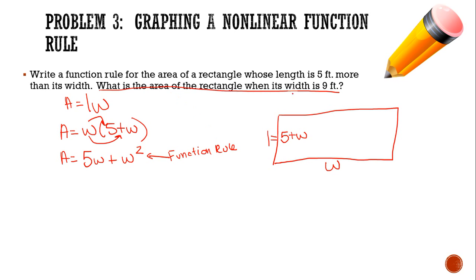Now I need to see, what if my width is 9? So I'm going to plug in 9 in for my width and see what my area gives me. So 5 times 9, I know that that is 45. And 9 squared, I know that is 81. So I'm going to go 45 plus 81, and that's going to give me 126. And I want to put a label on that. Feet. 126 feet.